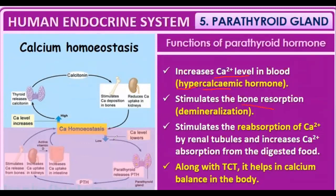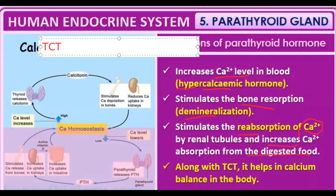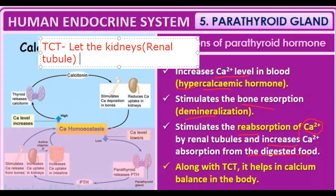PTH helps in bone resorption — it dissolves bone. If PTH increases in the body, our bones begin to become weak through demineralization. PTH also stimulates the reabsorption of calcium ions by the renal tubules, working opposite to thyrocalcitonin, which allows the kidneys to excrete calcium ions.